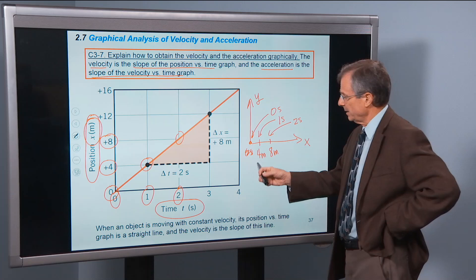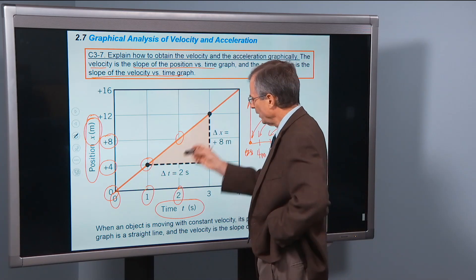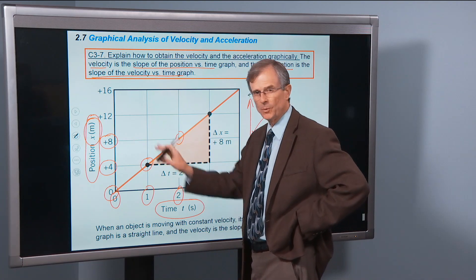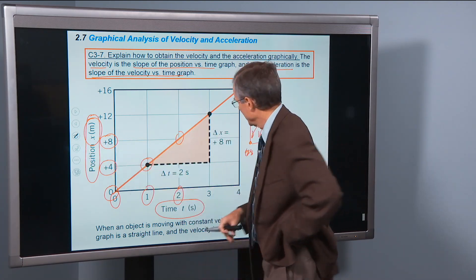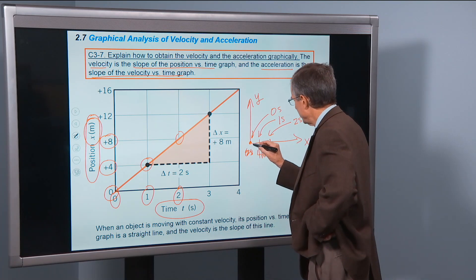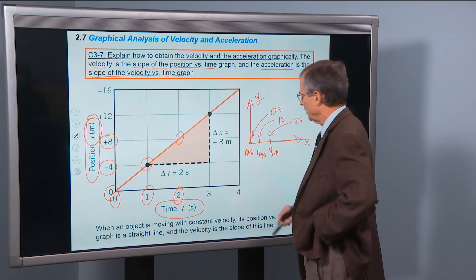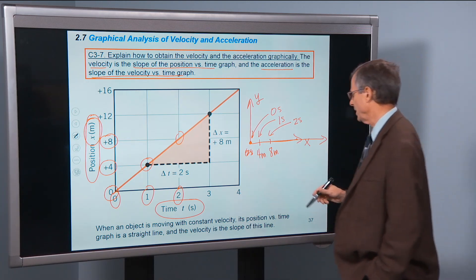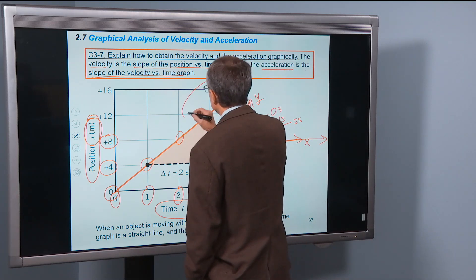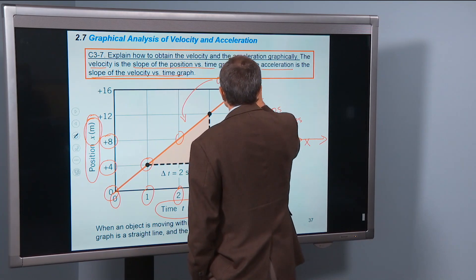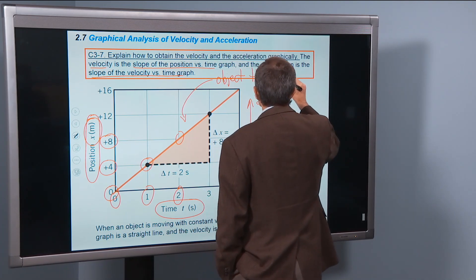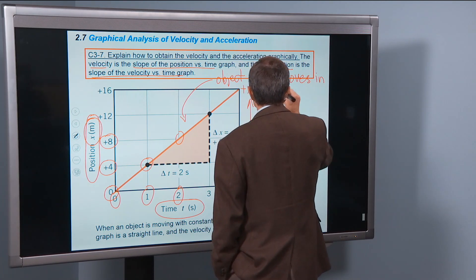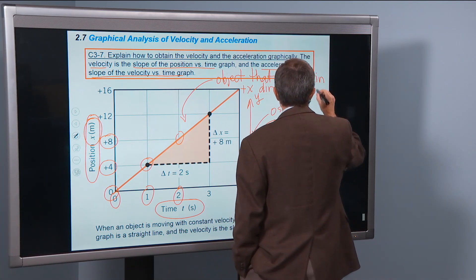So what this object is doing — it's not moving at an angle with respect to x and y axes. That's where things can get confusing if you mix up x-y with time-x. This is not x and y; it's time and x. What this object is doing is starting here and moving along the x-axis at a constant velocity — moving in the plus x direction at a constant velocity.